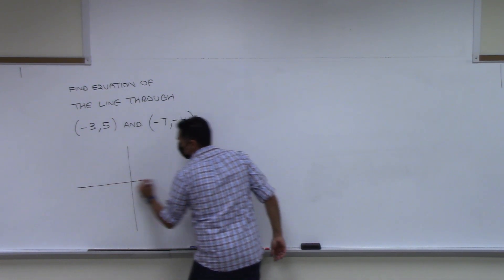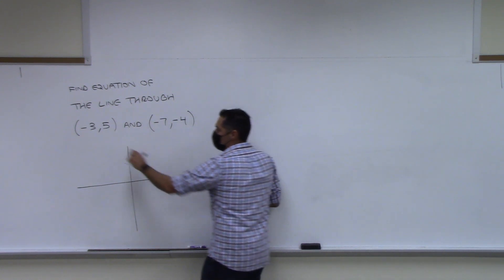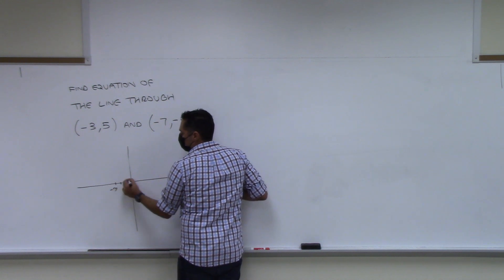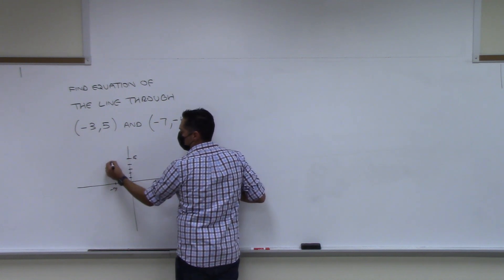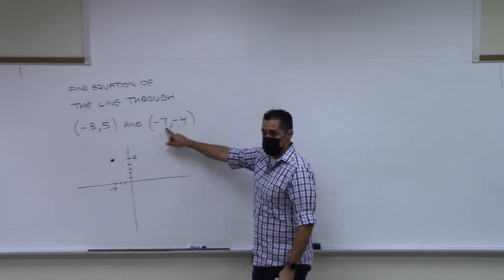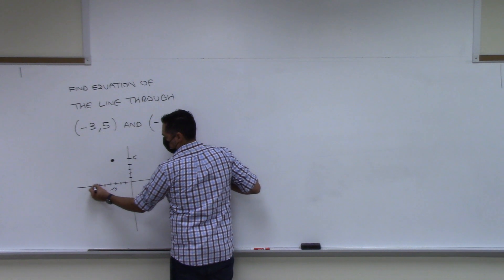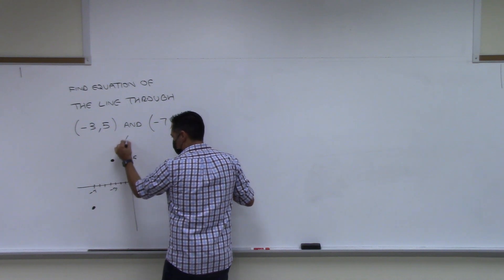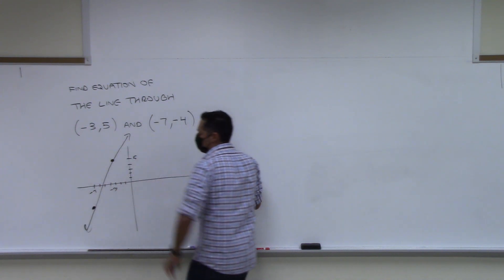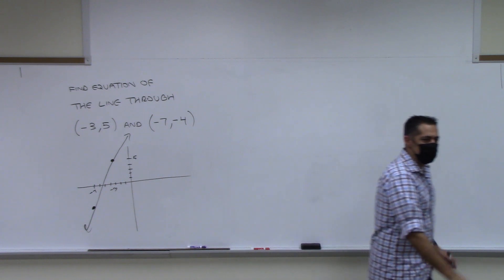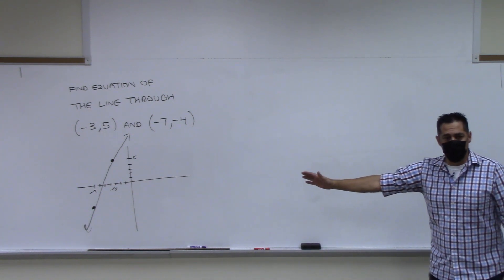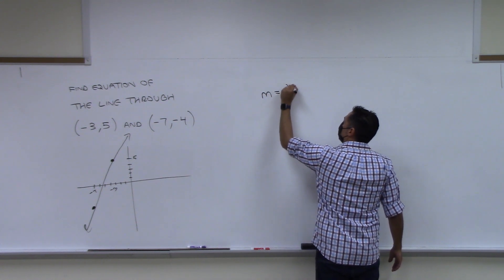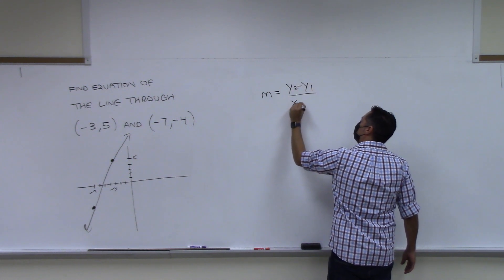Find the equation of the line through (−3, 5) and (−7, −4). There's some line through those two points and I'm asking for its equation. You don't need to draw the line, but I'll do it quickly: negative 3, 5 means go left 3 and up 5. Then negative 7, negative 4 is left 7 and down 4. Draw a straight line through those — we're trying to find the equation of that line.